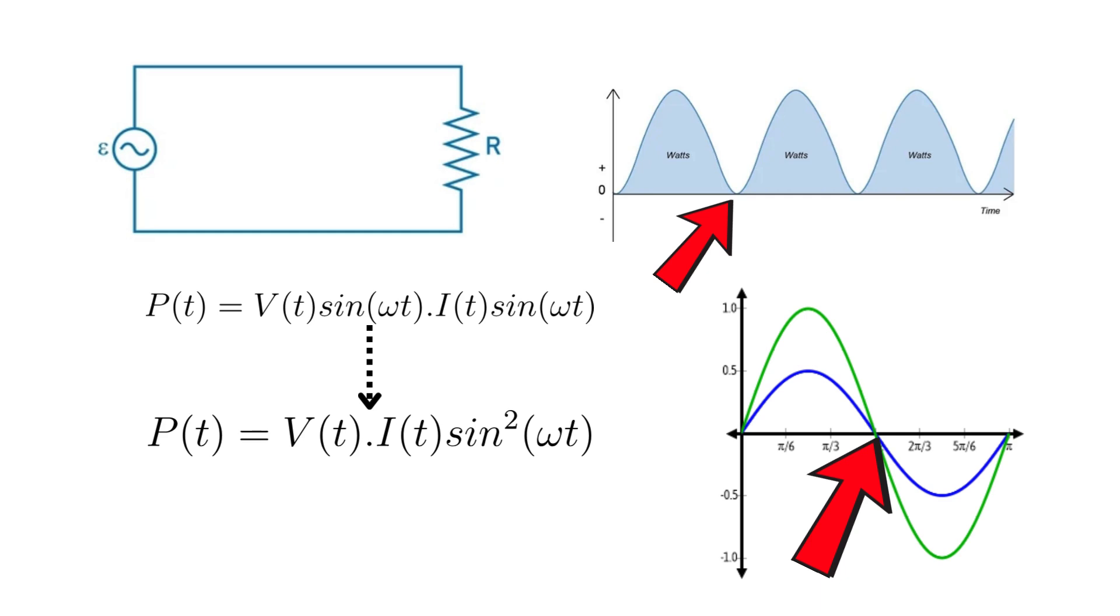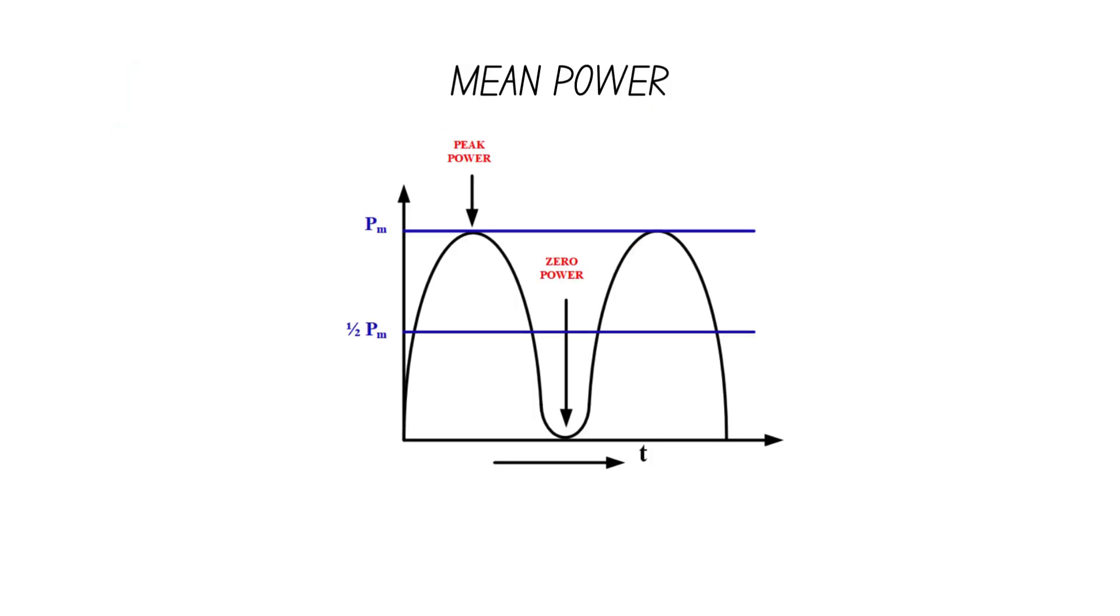So, a meaningful description of this power is through an average value. This mean power can be described as the DC equivalent power to the AC power in question.